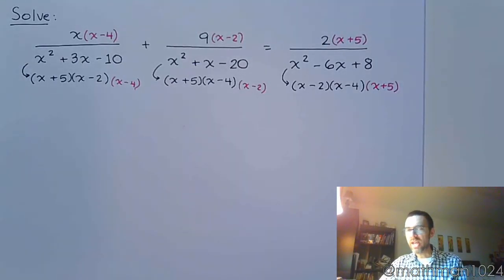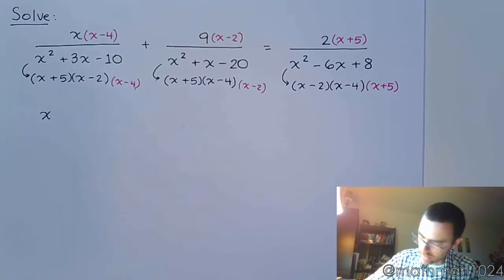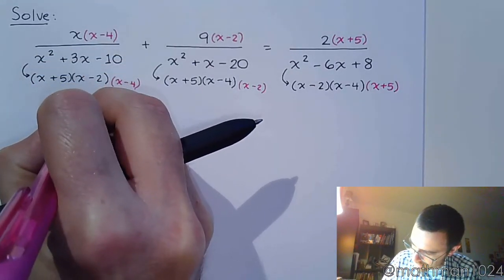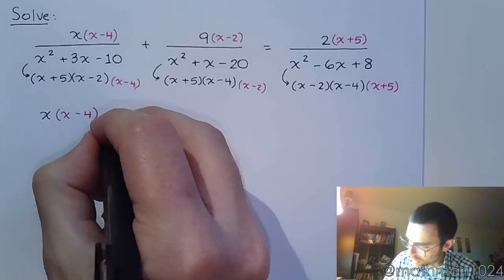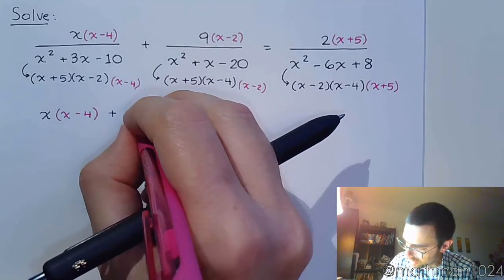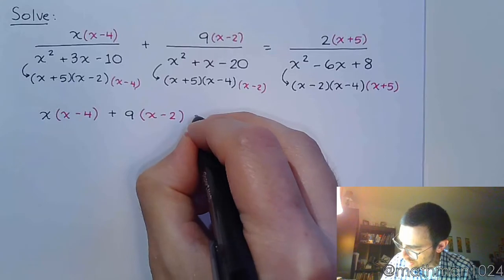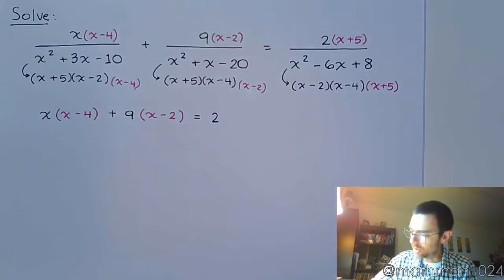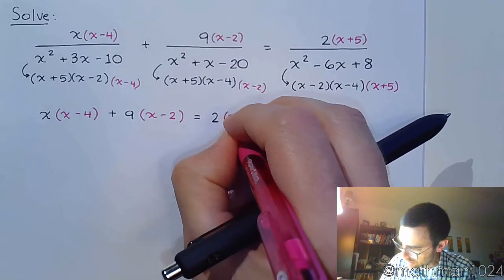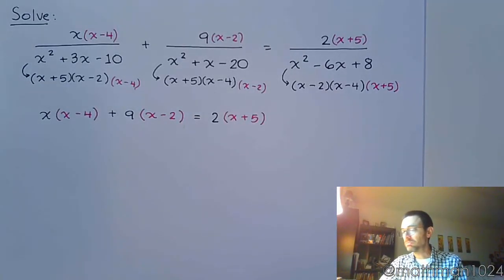So since everybody has the same denominator, we can now rewrite our equation just by looking at the numerators. So, we have x times x minus 4 plus 9 times x minus 2 is equal to 2 times x plus 5.